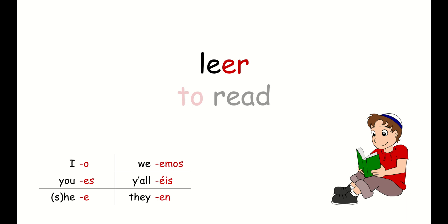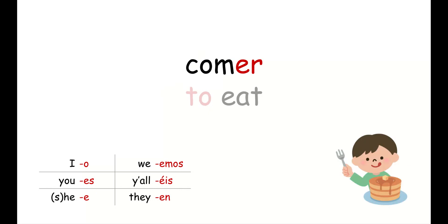Let me do a couple of examples. Leer means to read. If I said leer plus EN — leen — what do you think that would mean? If you guessed they read, you are correct. Leer means they read. Comer means to eat. So if I take off the ending of comer and add ES — comes — what do you think that would mean? If you guessed you eat, you are correct. Comes means you eat.